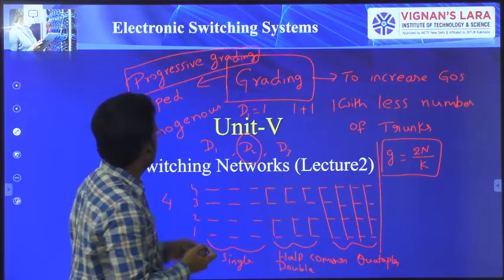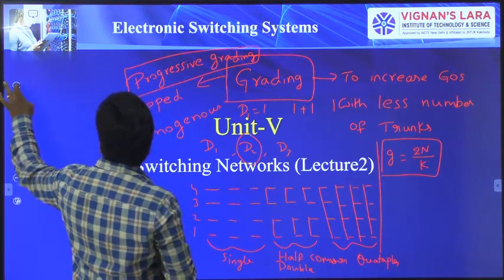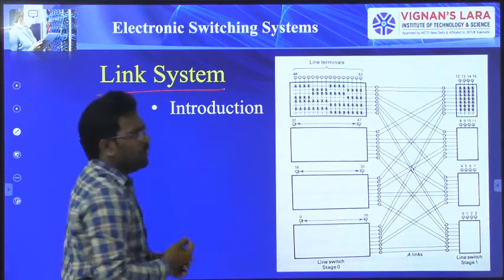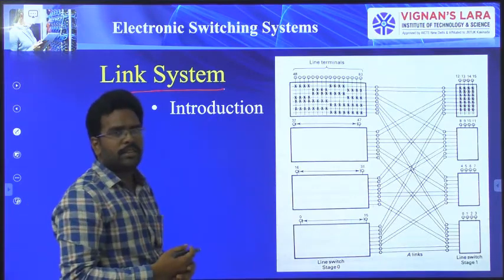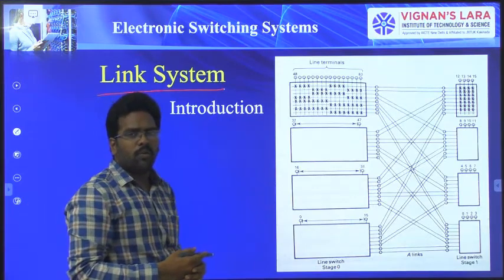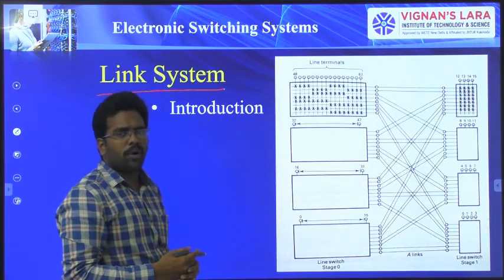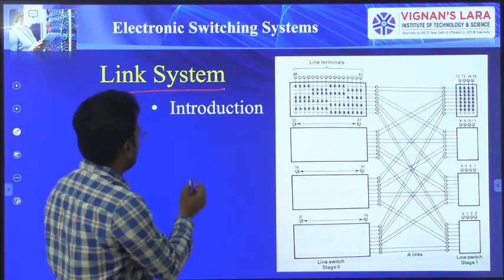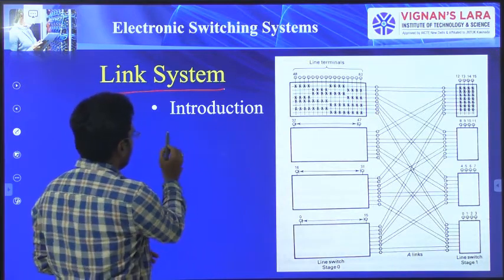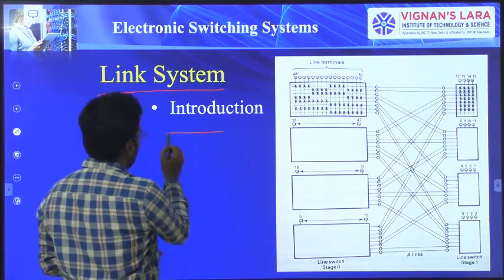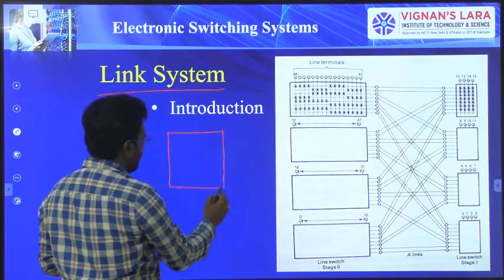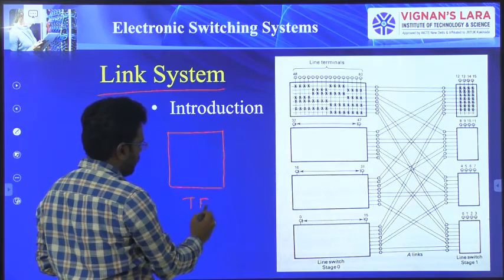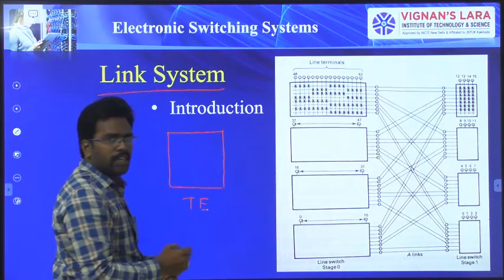Now in this class we will discuss about the link system — what is a link system and what is the advantage of using a link system. To discuss this, first you should know what is a transit exchange. A transit exchange contains some incoming trunks and some outgoing trunks; the number of incoming trunks may not be equal to the number of outgoing trunks.